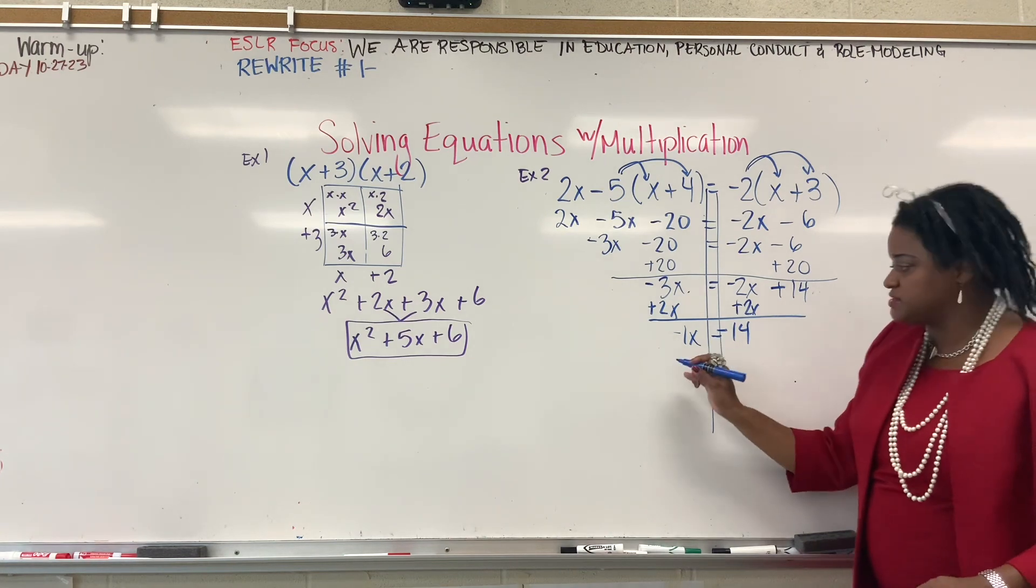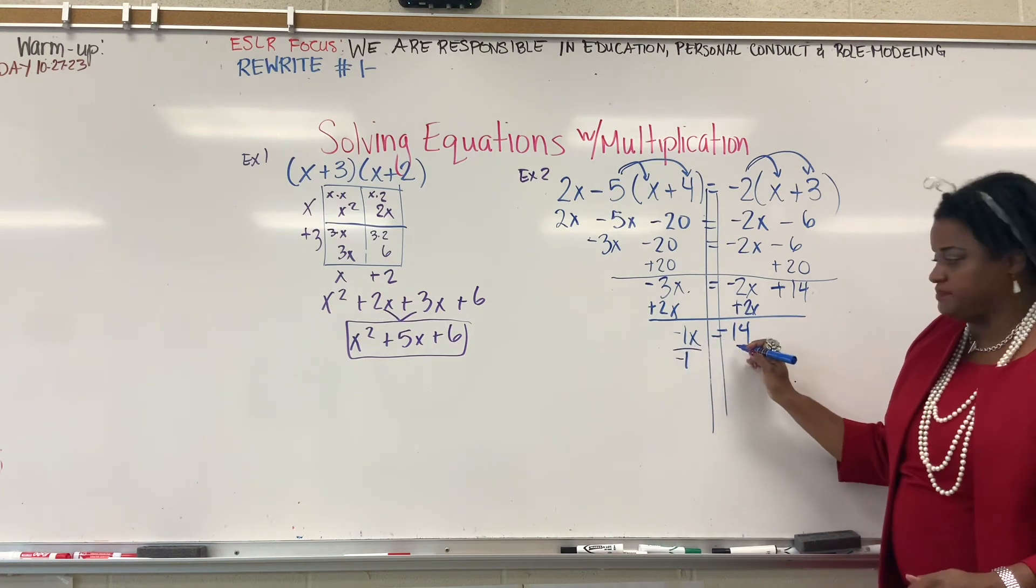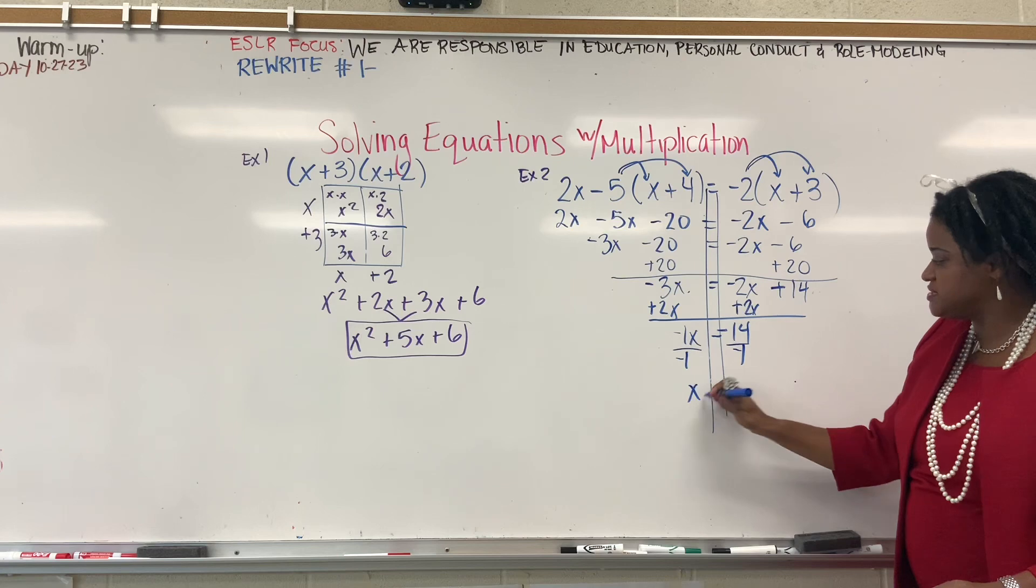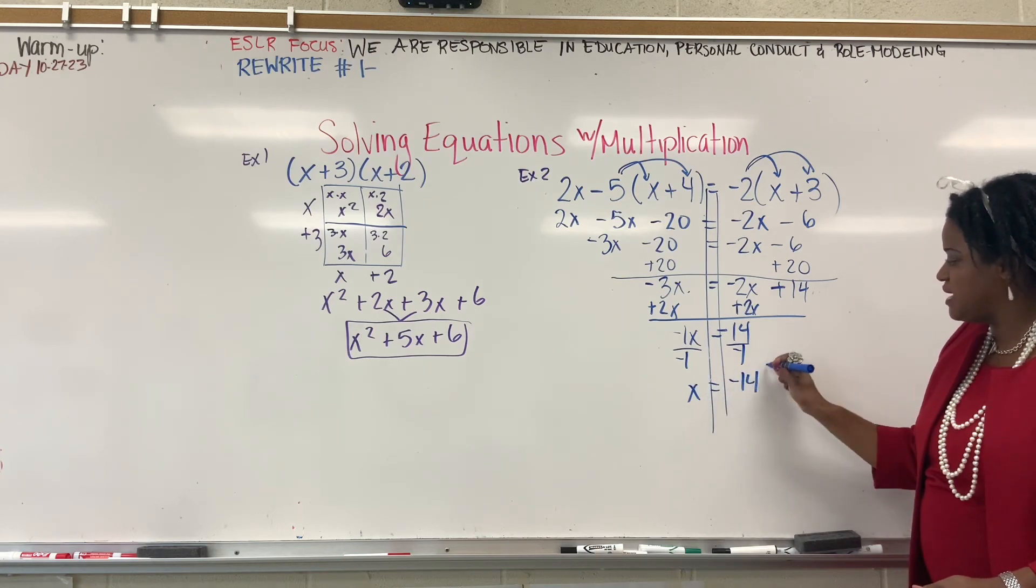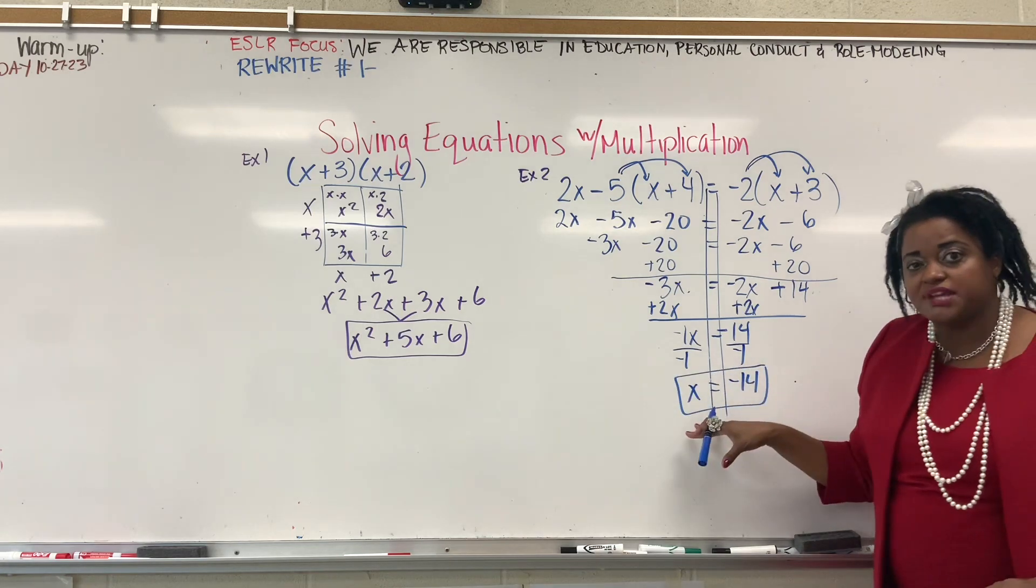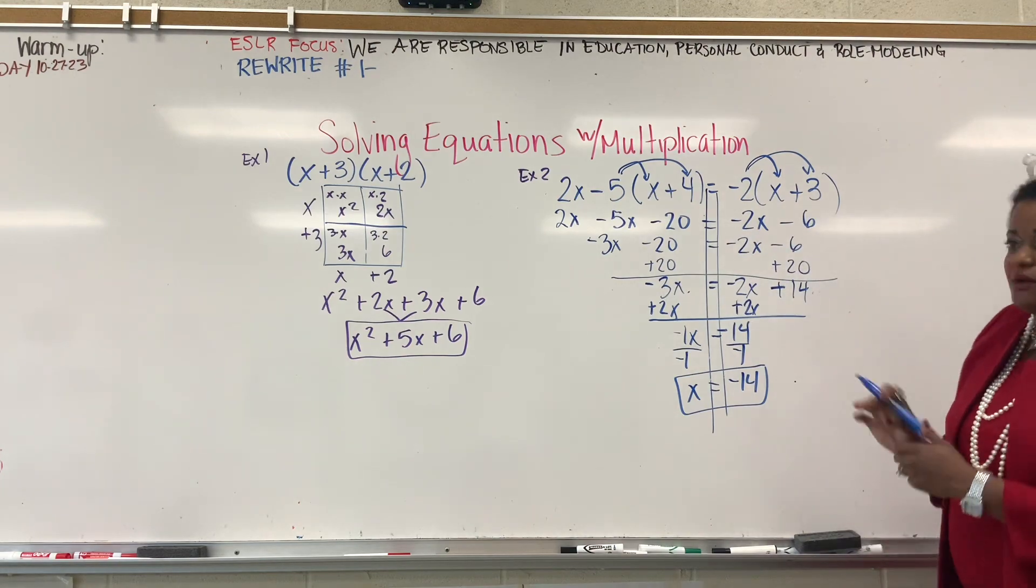And we don't want to leave that a negative, so we're going to divide by negative 1. x equals negative 14. And that's your answer. You can double check by plugging that in.